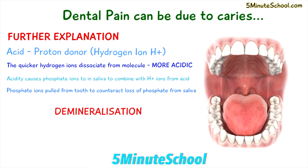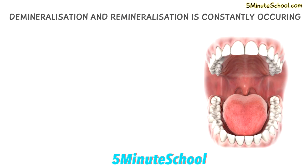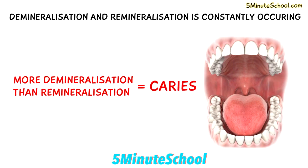Once the pH returns back to normal, phosphate can move back into the teeth in a process called remineralization. Although the teeth are in this constant state of demineralization and remineralization, when demineralization occurs more, the overall effect is a loss of tooth structure and the formation of dental caries.